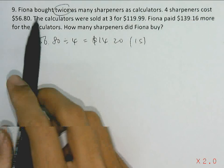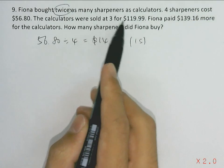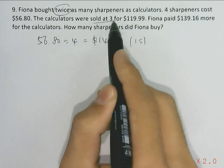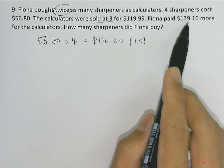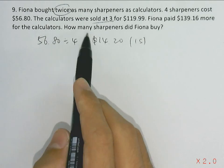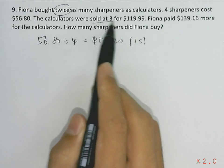The calculators were sold at 3 for $119.99, so they were only sold in groups of three. Fiona paid $139.16 more for all the calculators. So how many sharpeners did Fiona buy?